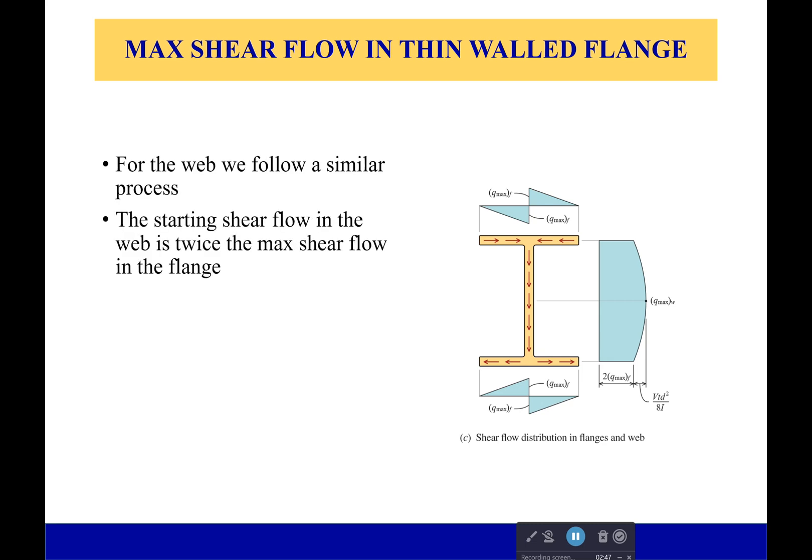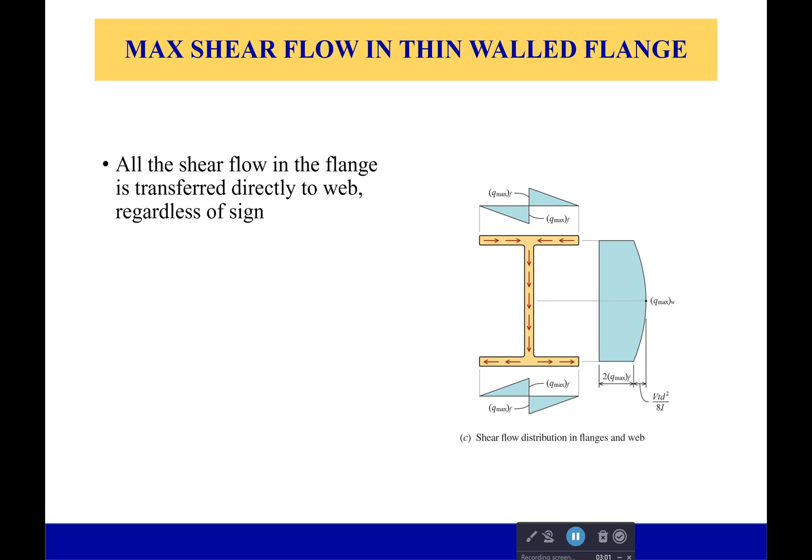For the web, we have a very similar equation, and the starting shear flow is going to be twice the max shear flow in the flange because, as I said earlier, both of these shear flows have to come together. They come together and they go down the web like a channel because all that shear flow is going to be transferred to the web regardless of sign.